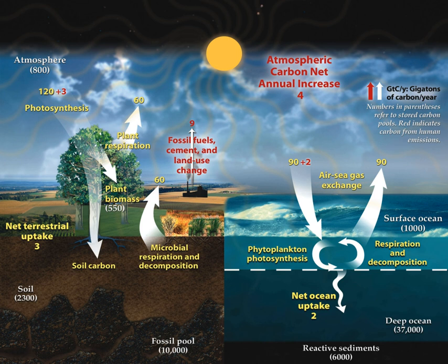It also can acidify other surfaces it touches or be washed into the ocean. Human activities over the past two centuries have significantly increased the amount of carbon in the atmosphere, mainly in the form of carbon dioxide, both by modifying ecosystems' ability to extract carbon dioxide from the atmosphere and by emitting it directly, e.g., by burning fossil fuels and manufacturing concrete.